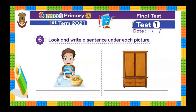Question number six. Look and write a sentence under each picture. Look at this boy — can you describe what he is doing in a sentence? The boy is eating healthy food.